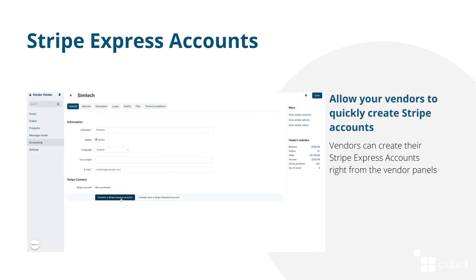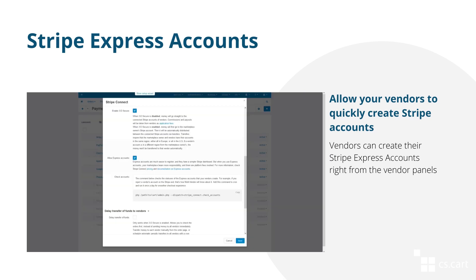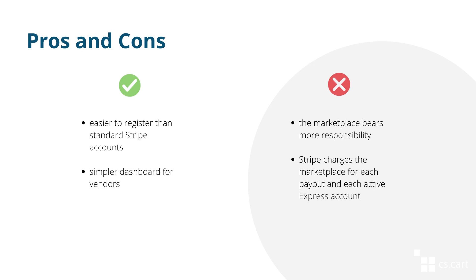Stripe Connect has a functionality called Express Accounts, which is useful for vendors who don't have their own Stripe account yet. If you allow it, those vendors will be able to sign up for a Stripe Express account right from the vendor panel. Express accounts have some benefits: they're much easier to register than standard Stripe accounts, and they have a simpler dashboard for vendors.